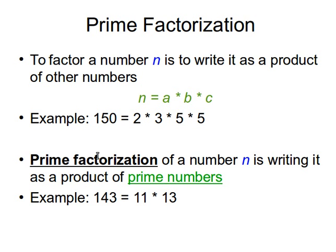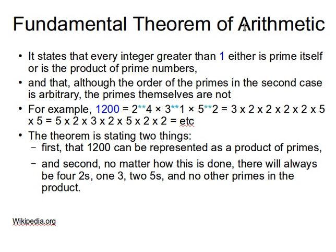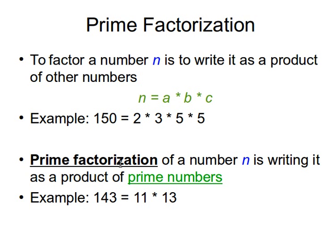Now we have another idea: prime factorization. This is very important. Normal factorization breaks a number into any factors, but prime factorization means writing the number as a product of prime numbers specifically. This is called the fundamental theorem of arithmetic — we'll come to that in a moment. For example, the number 143 can be written as the product of two prime numbers: 11 and 13.